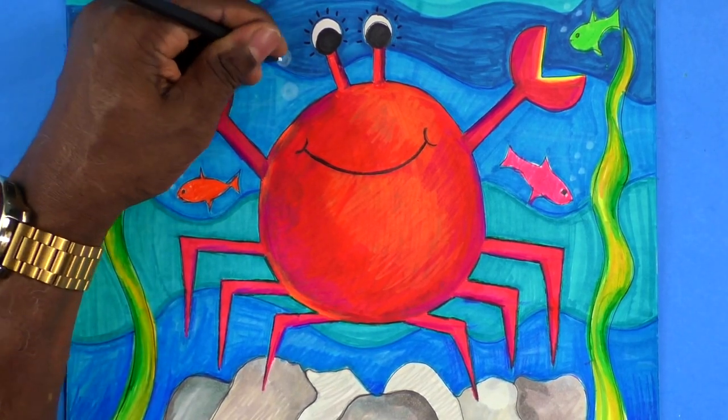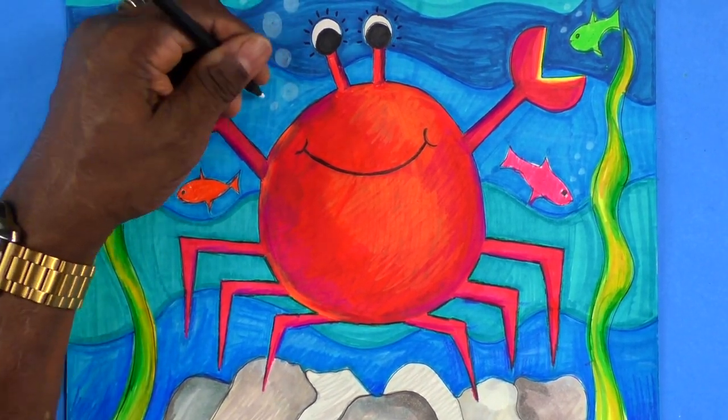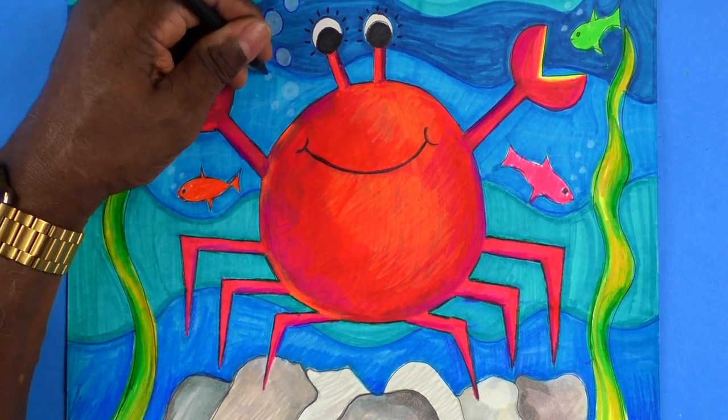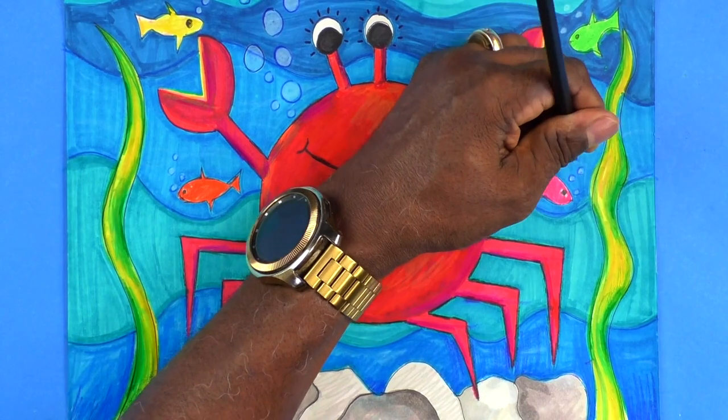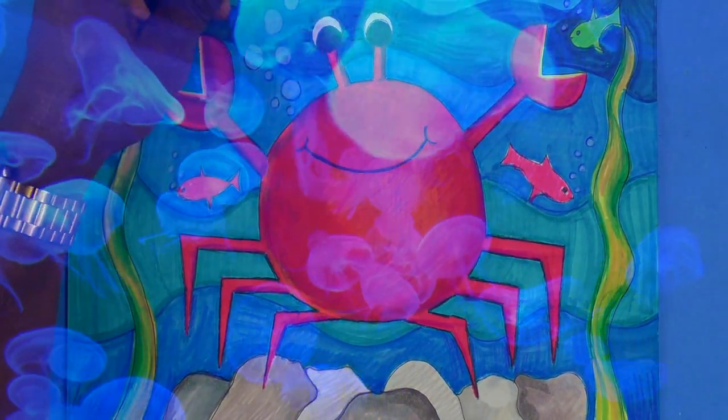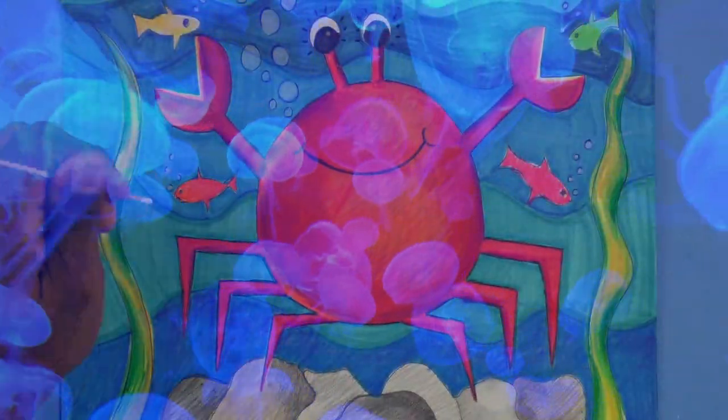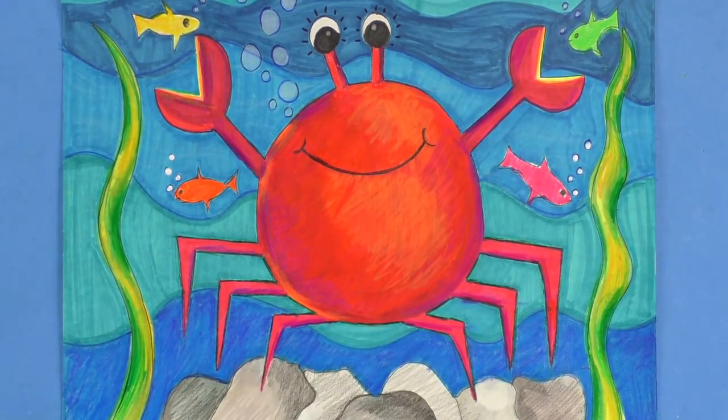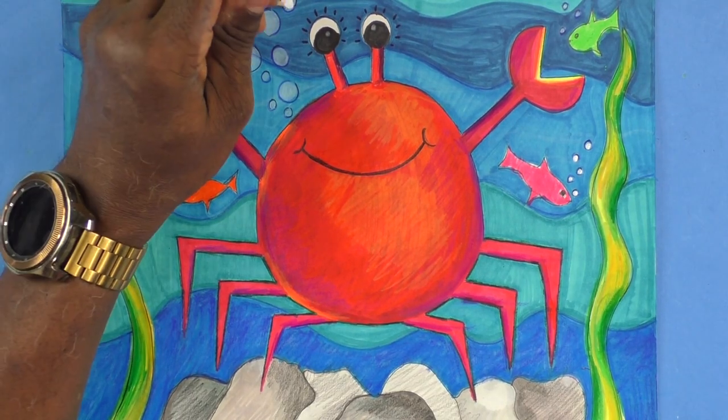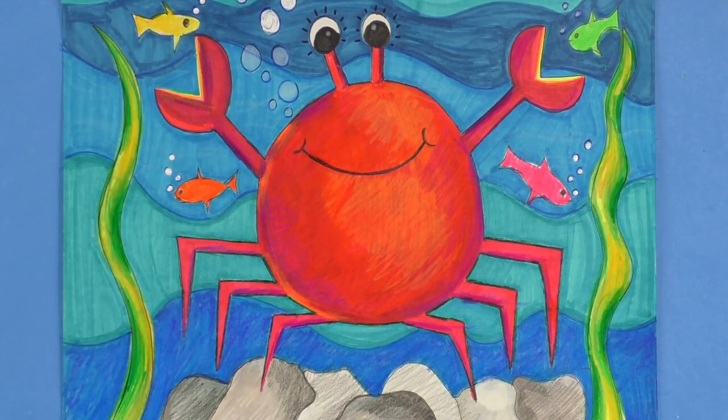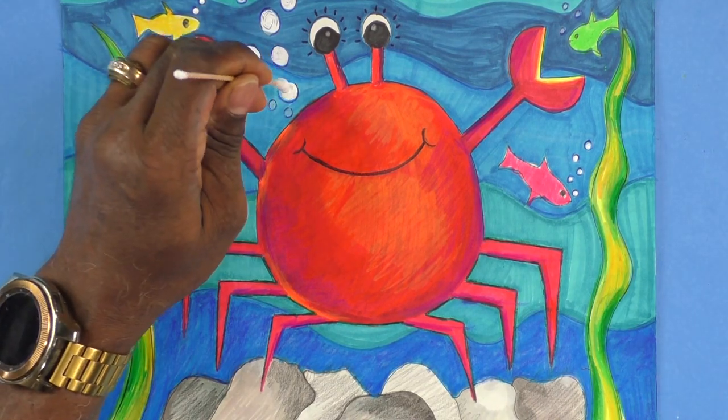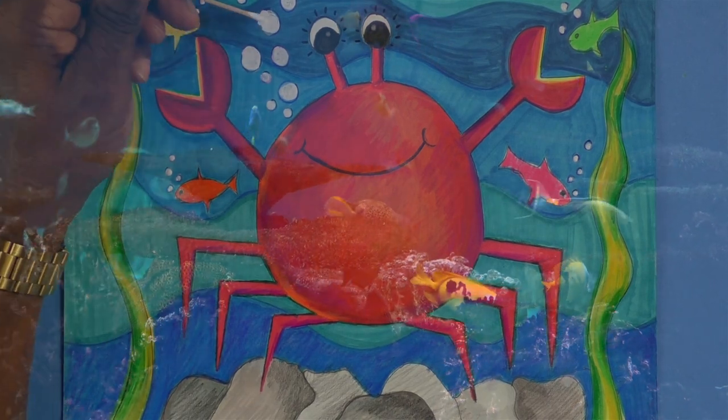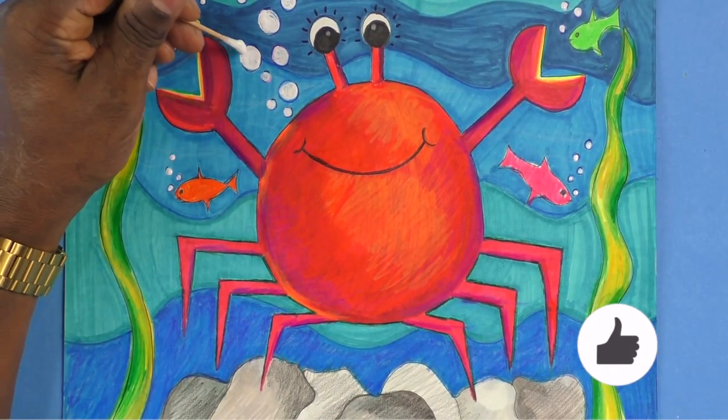Clumsy crab is coming along. We're making these bubbles now. I'm even adding something else. I'm using some white paint with a q-tip because this white really stands out.